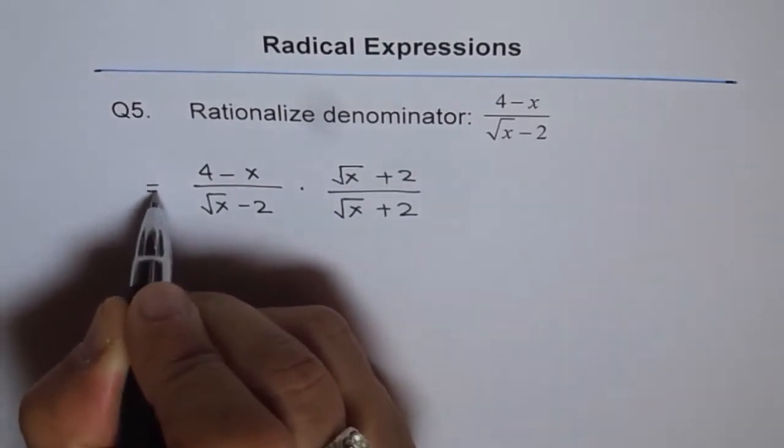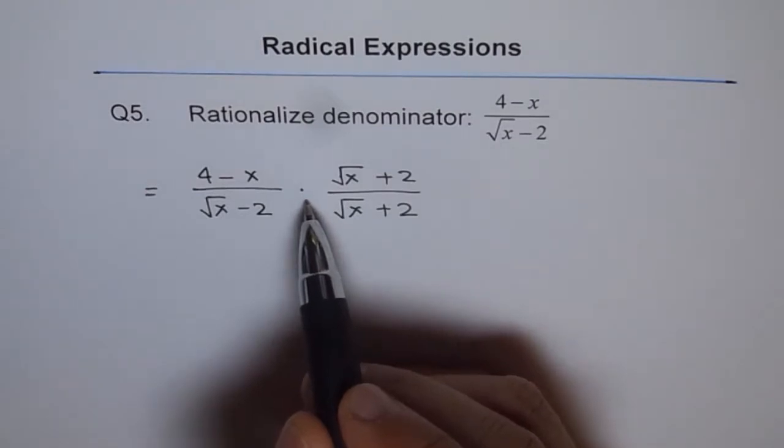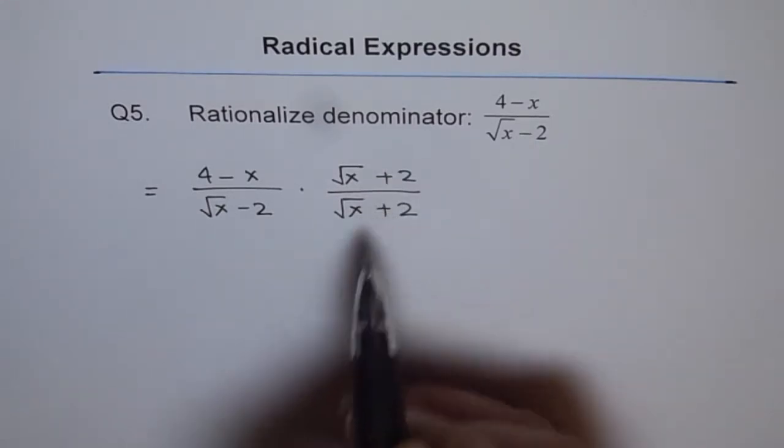So that is the expression. This expression is exactly the same as the given expression since effectively we are only multiplying by 1. Square root x plus 2 can be divided by square root x plus 2 and we get 1.